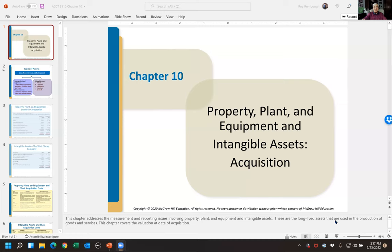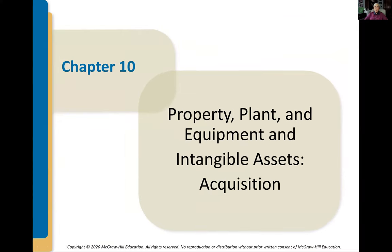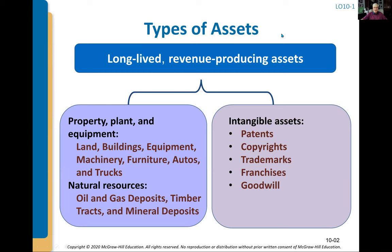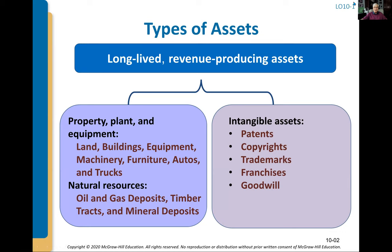I'm going to share my screen and we're going to get started. For my students, we're near the end of Accounting 3110, Intermediate Accounting 1. We basically go down the asset side of the balance sheet for Intermediate Accounting 1, and then Intermediate Accounting 2 covers the liability side and other complex issues. Today we're talking about not just property, plant and equipment, but also natural resources as well as intangible assets — all long-term assets on the balance sheet.